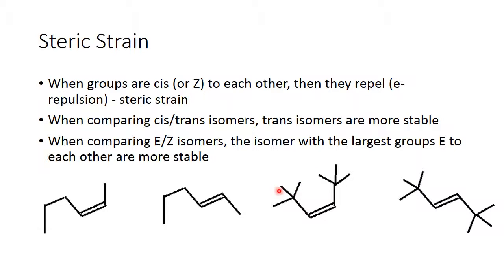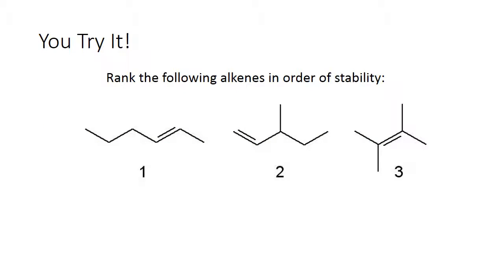A t-butyl group creates a very strained cis compound because the methyl groups on the t-butyl are constantly banging into each other. The trans compound has that strain removed because the groups are trans to each other. So when comparing cis and trans, the trans is always more stable than the cis. If comparing E and Z isomers, you have to look at the size of the groups — the E isomer, where the two largest groups are on opposite sides, is more stable, while Z, where the larger groups are on the same side, is less stable.